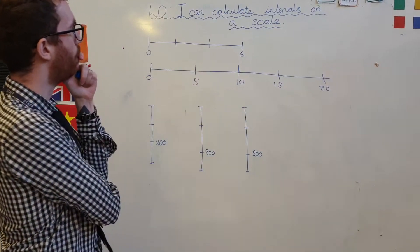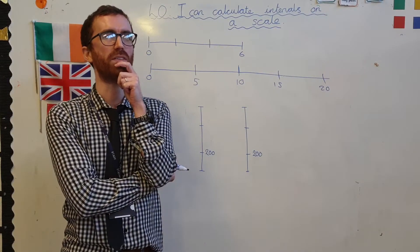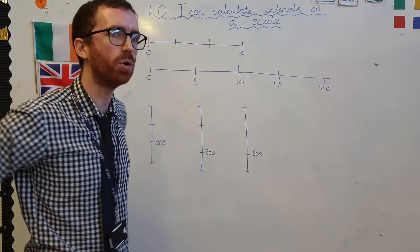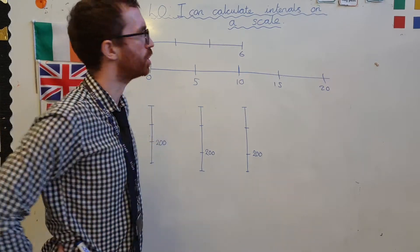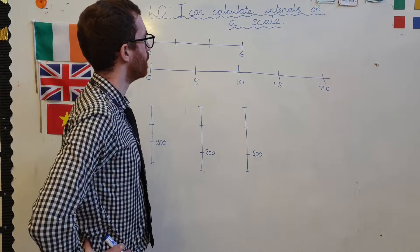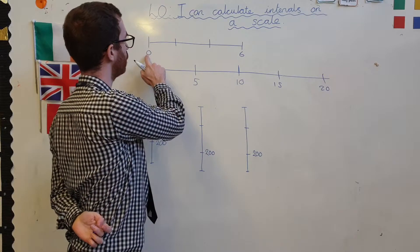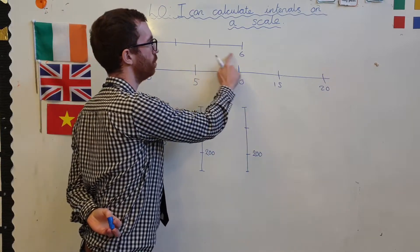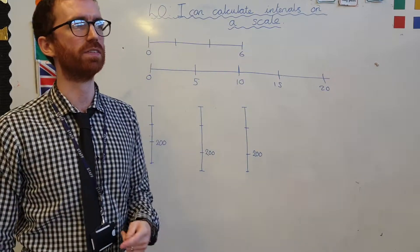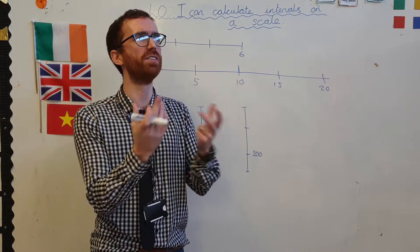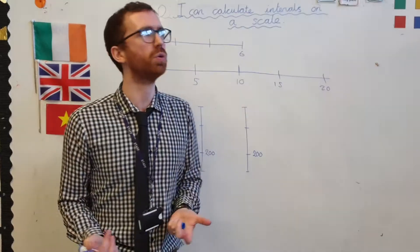What about up here? Now this is suddenly a little bit trickier, because I don't have a halfway point. What on earth am I going to do to work out this one? Well, how many points do I have from 0? I've got 1, 2, 3 points on my scale.